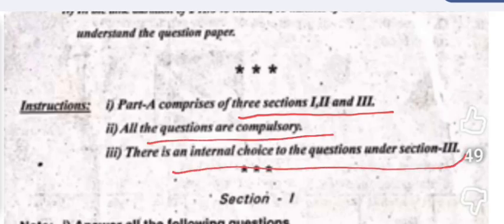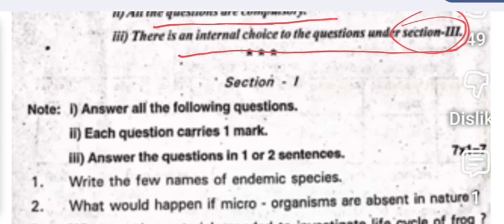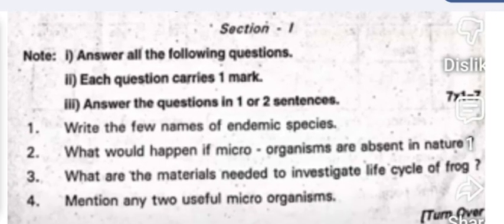Part A comprises three sections: one, two, and three. Answer all the questions. There is an internal choice only in Section 3. Section A — you have to answer all the questions given here; each question carries one mark and you have to write the answer in one to two sentences.